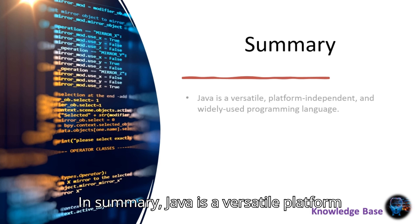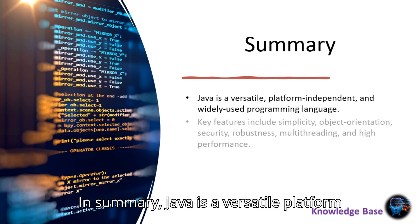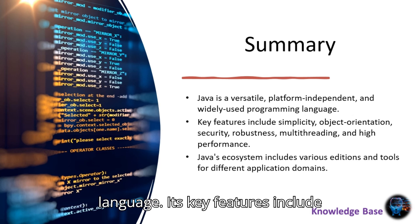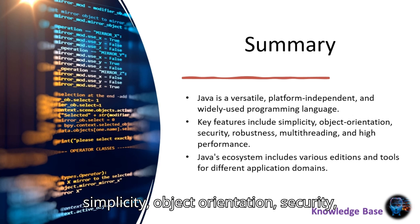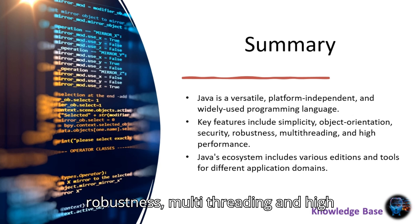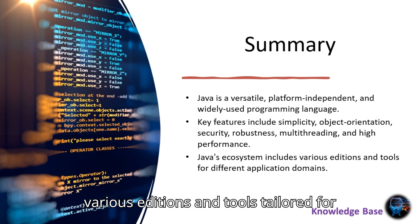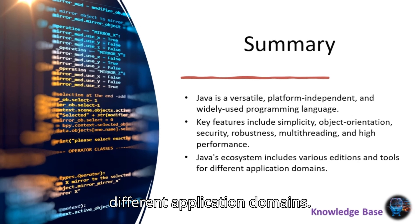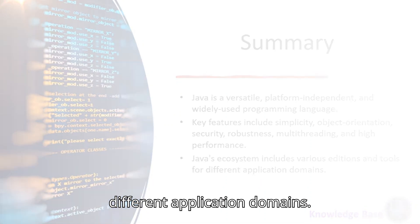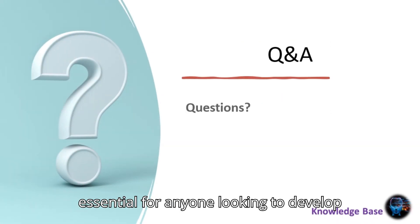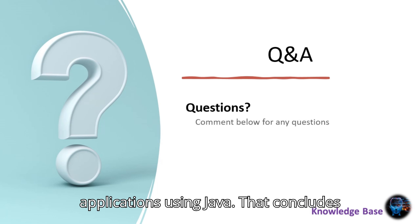In summary, Java is a versatile, platform-independent, and widely used programming language. Its key features include simplicity, object orientation, security, robustness, multithreading, and high performance. Java's ecosystem includes various editions and tools tailored for different application domains. Understanding these core concepts is essential for anyone looking to develop applications using Java.